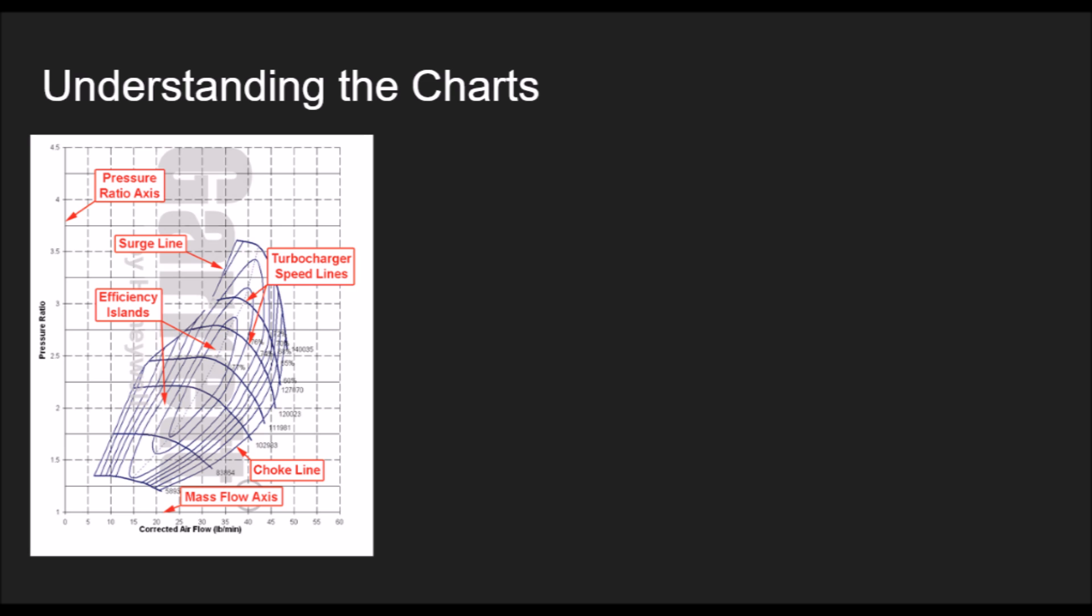The surge line is where your turbo isn't really even working. It's way too big for your car. The efficiency islands are just kind of saying how efficient your turbo is. And then there's the mass airflow axis, which is what you calculated, and the pressure ratio axis.